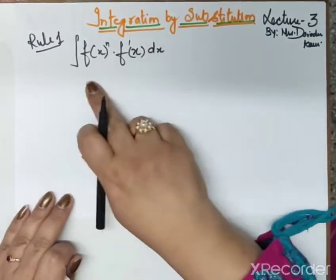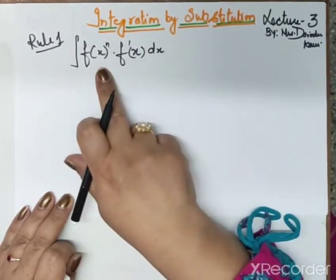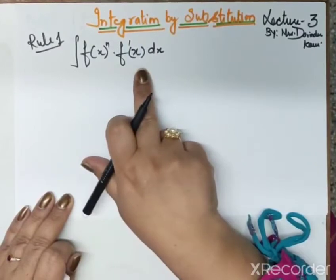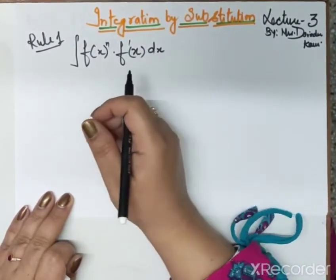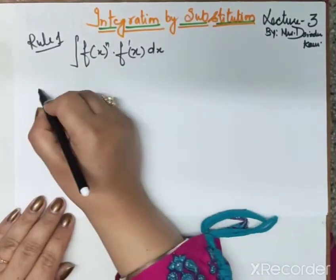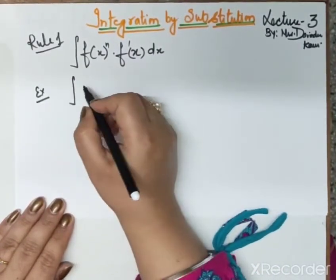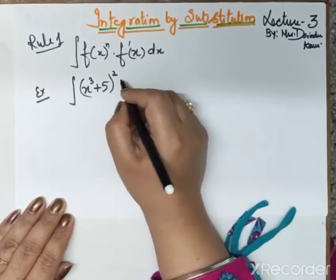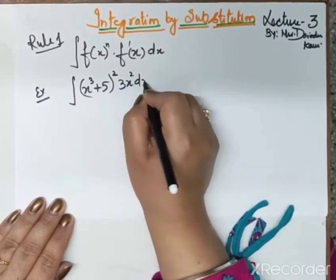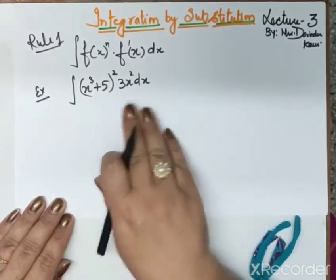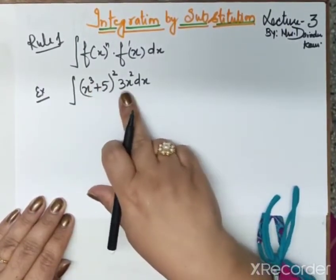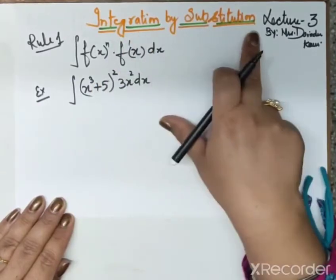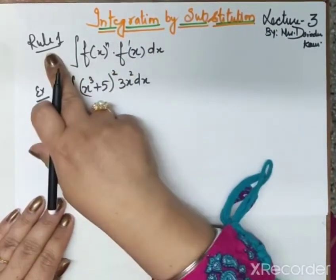Our first rule is: if we have to integrate a function in the form where, along with the function, we have the multiplicative derivative of the same function, then how we are going to integrate that kind of function. Let us take an example. We have a function of the form (x³ + 5)² · 3x² dx. We can see clearly that the derivative of x³ is 3x². So it is in this form, and we have to apply integration by substitution, rule number 1.